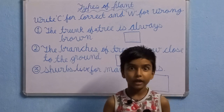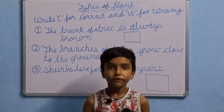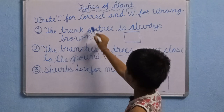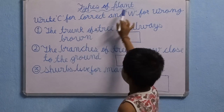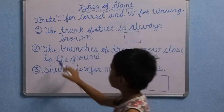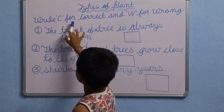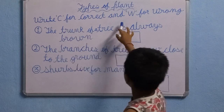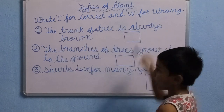Hello friends, how are you all? I hope you are well. Today we will learn Class 2 types of plants. Write C for correct and W for wrong.